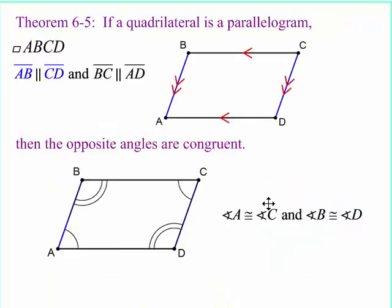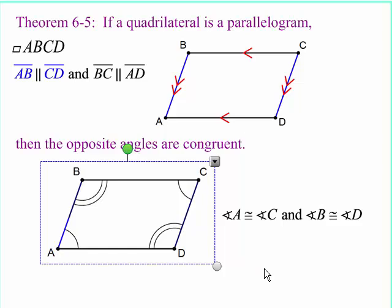Theorem 6-5. If a quadrilateral is a parallelogram, then the opposite angles are congruent. And they are. So angle A is congruent to angle C. Angle B is congruent to angle D.